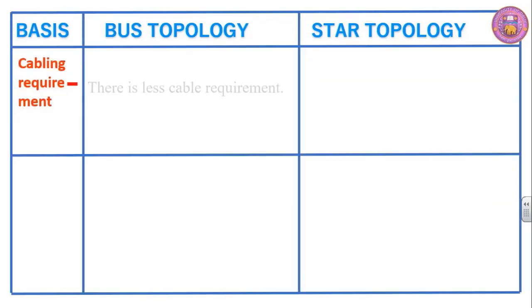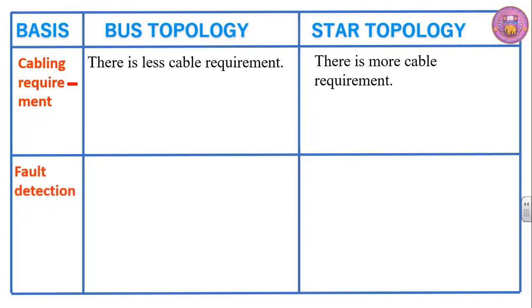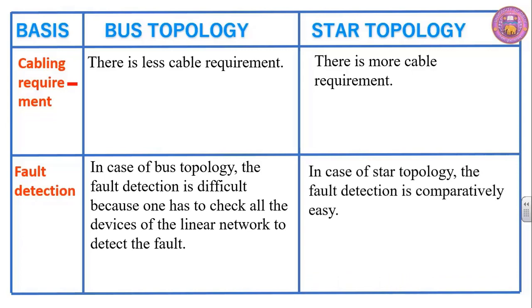Cabling requirement. There is less cable requirement in bus topology and more cable requirement in star topology. In bus topology, fault detection is difficult because one has to check all the devices of the linear network. In star topology, fault detection is comparatively easy.